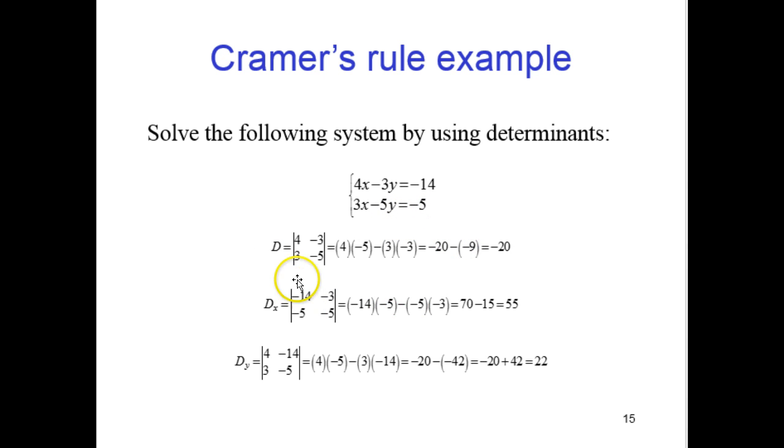So our d determinant is just our 4, 3 minus 3 minus 5. So that's set up here. And the way we calculate the determinant, remember we multiply this way, 4 times negative 5.